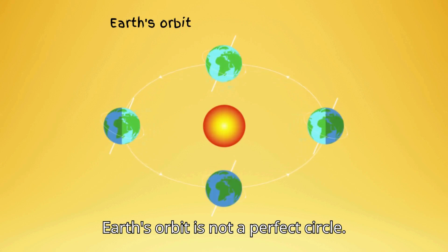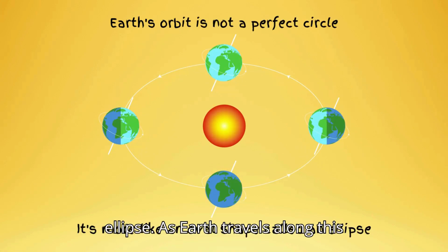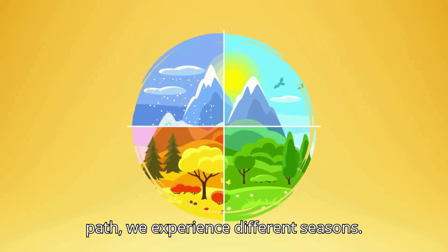Earth's orbit is not a perfect circle. It's more like an oval shape, called an ellipse. As Earth travels along this path, we experience different seasons.